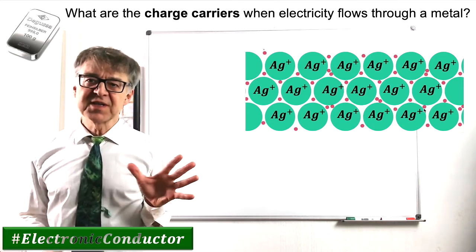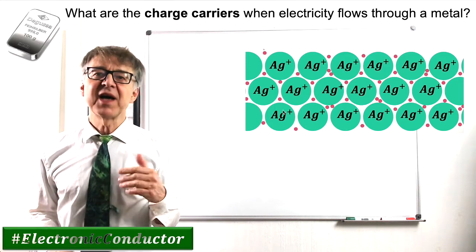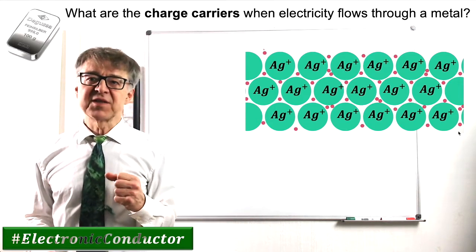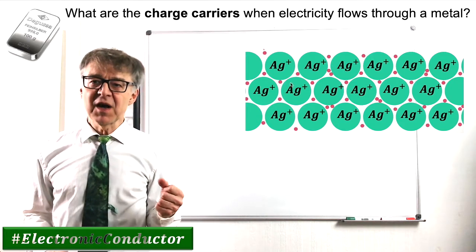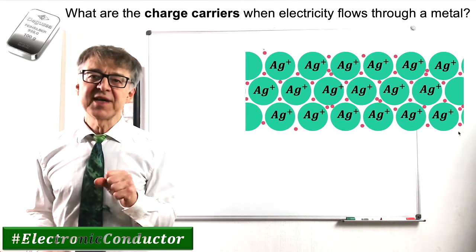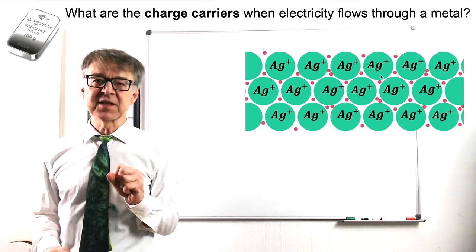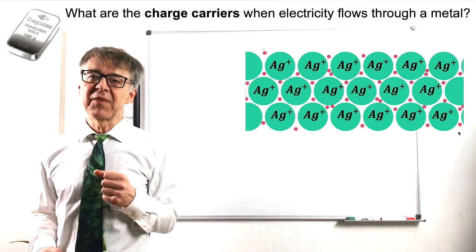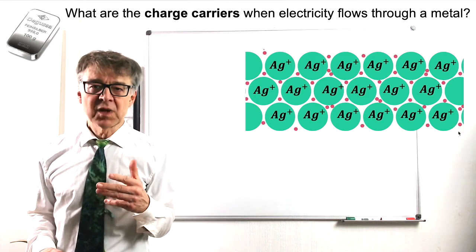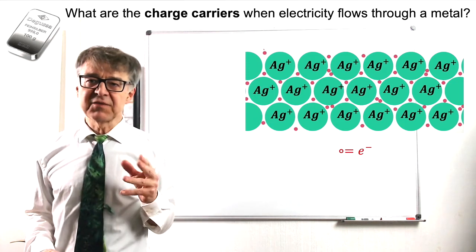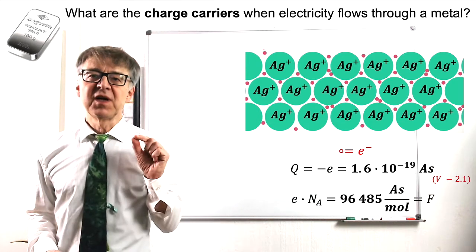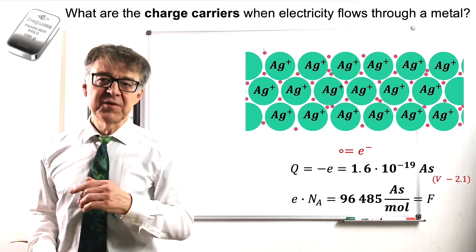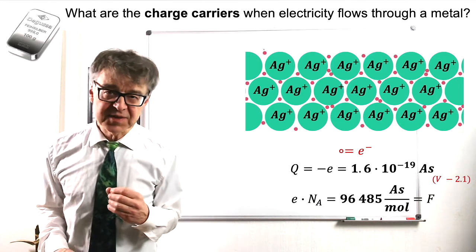Charge transfer is exclusively carried out by electrons. The electron gas model is an easy way to explain conductivity of metals, for example silver. The positively charged silver ions are fixed in the crystal lattice. The electrons are free to move around them like a gas. Every electron has a negative elementary charge. One mole of electrons has a charge of 96,485 Coulombs. This is Faraday's constant.